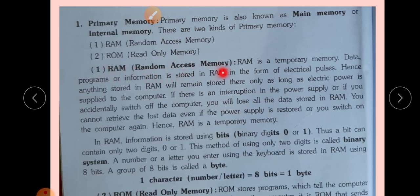RAM — Random Access Memory — is a temporary memory. This means information is stored only for some time. Data, programs, or information is stored in RAM in the form of electric pulses — electric currents go in and data is stored in the form of those electric pulses. Hence, anything stored in RAM will remain stored only as long as electric power is supplied to the computer.